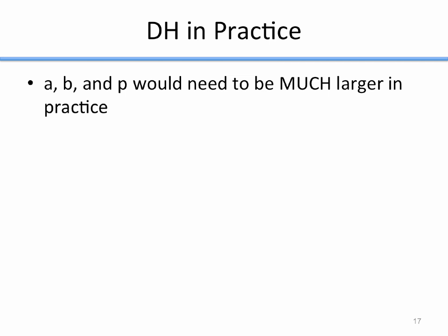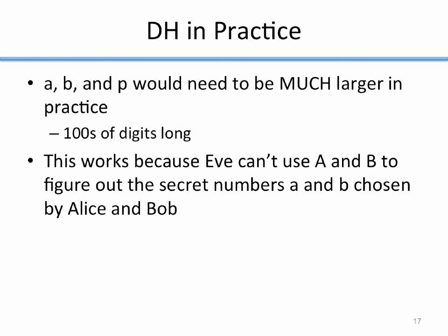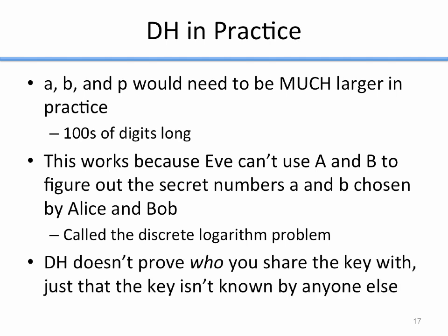In practice, Diffie-Hellman uses much bigger numbers than this. A, B, and p would be much larger — in fact, they would be hundreds of digits long; instead of a number like 23, it would be a 100-digit-long number. The reason this works is because Eve can't use capital A and capital B to figure out the secret numbers lowercase a and lowercase b chosen by Alice and Bob. Capital A and capital B are public, little a and little b are private, and Eve cannot determine the private numbers. In order to do that, she'd have to solve what's called the discrete log problem — figuring out how to turn capital A into the base components used to create it — and right now we don't know how to do that.